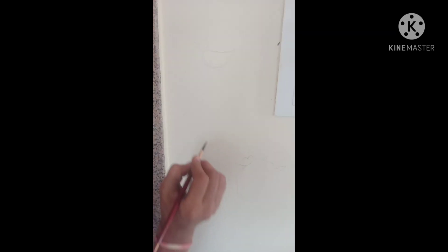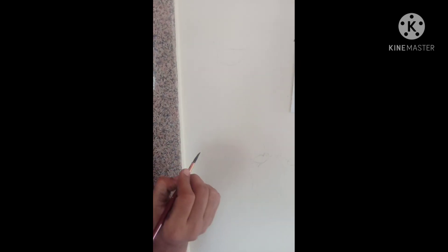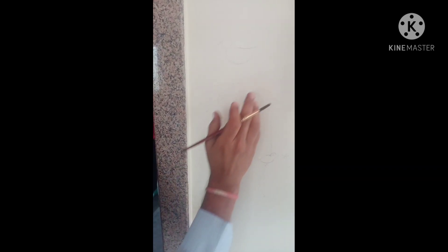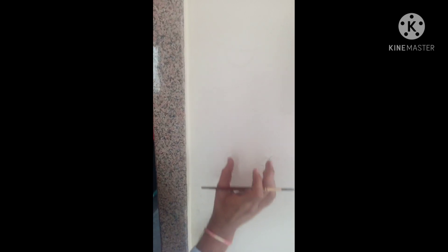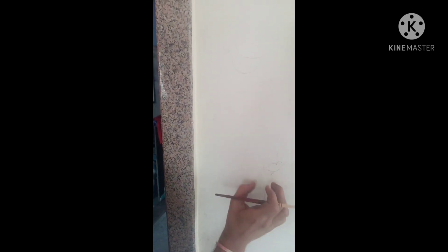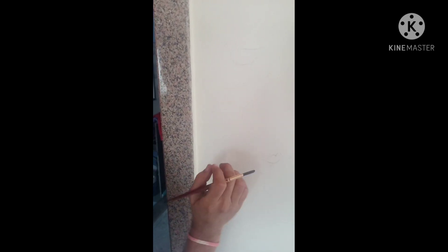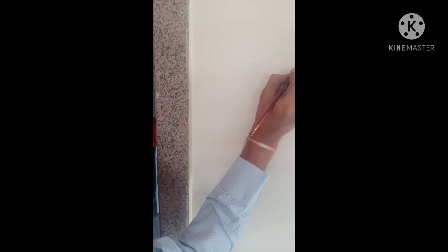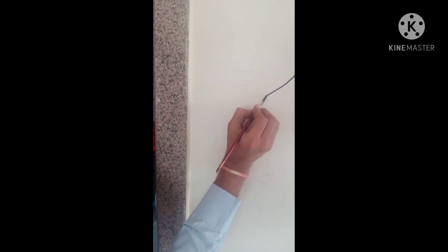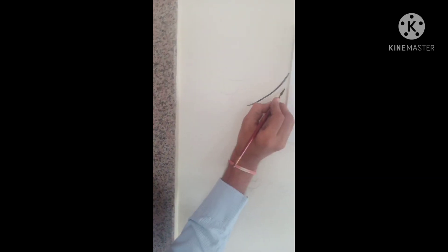Welcome student. For the small wall painting activity, we will today take the tree, one branch, and on the branch one nest and birds are there and some leaf shapes. First of all, do the pencil drawing properly.